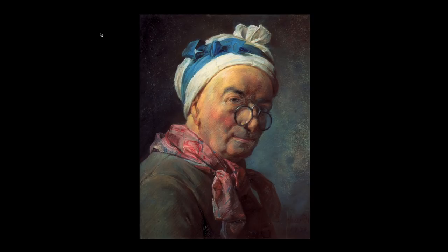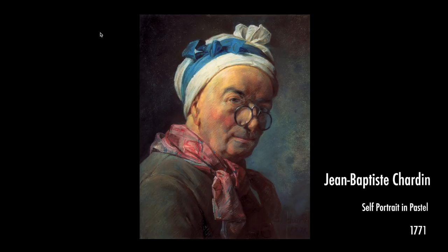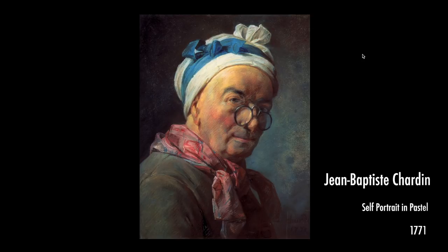To get us started, this is a pastel painting from 1771 by Jean-Baptiste Siméon Chardin. I really love his work. You'll see the direction of the light coming, just hitting this side of his face, creating this lighter area in the background over here and the darker area over here — perfect for setting off the white of his turban. And then, in contrast, setting off that dark side of his face against the background. So that's a really good clear example of using directional light.